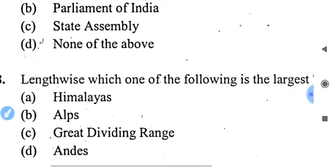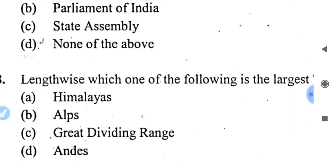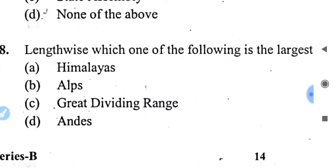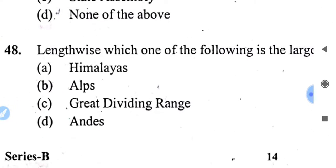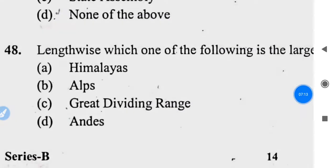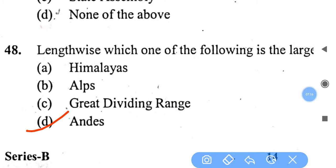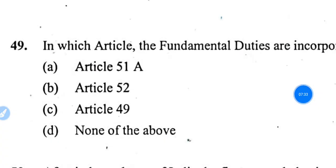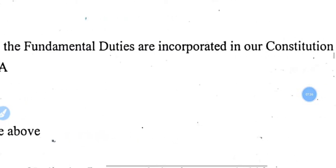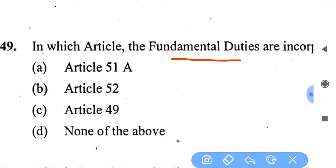Which one of the following is the largest mountain range lengthwise — Himalayas, Alps, Great Dividing Range, or Andes? The right answer is Andes, the longest mountain range. In which article are fundamental duties incorporated in our constitution? The answer is Article 51A.